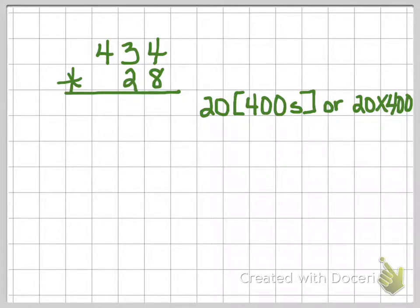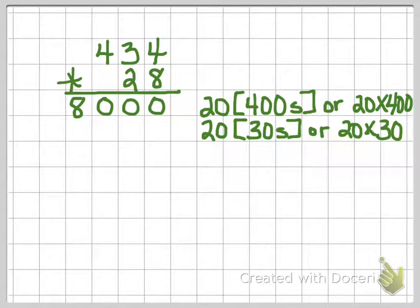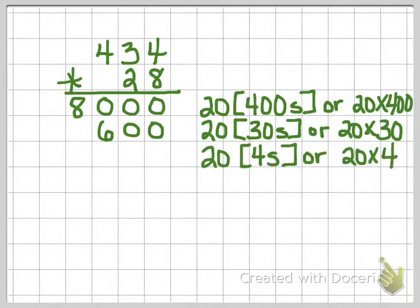We've got 20 four hundreds, or 20 times 400. And when we multiply that, that's going to give us 8,000. Then we are going to have 20 thirties, or 20 times 30, which is going to give us 600. And then we have 20 fours, or 20 times 4, which is going to give us 80.